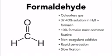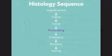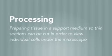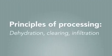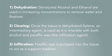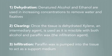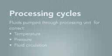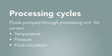This brings us to the next step in the sequence: processing. The aim of processing is to prepare your tissue in a support medium such as paraffin wax, so that very thin sections can be cut in order to observe individual cells under the microscope. The three main principles of processing are dehydration, clearing, and infiltration. During dehydration, denatured alcohol and ethanol are used in increasing concentrations to remove water and fixatives. Once the tissue is dehydrated, xylene — an intermediary agent — is used to clear the tissue, as it is miscible with both alcohol and paraffin wax. During infiltration, paraffin wax is pumped into the tissue to act as a support medium. The fluids are pumped in and out of the processing unit in a controlled manner for correct temperature, pressure, and fluid circulation.